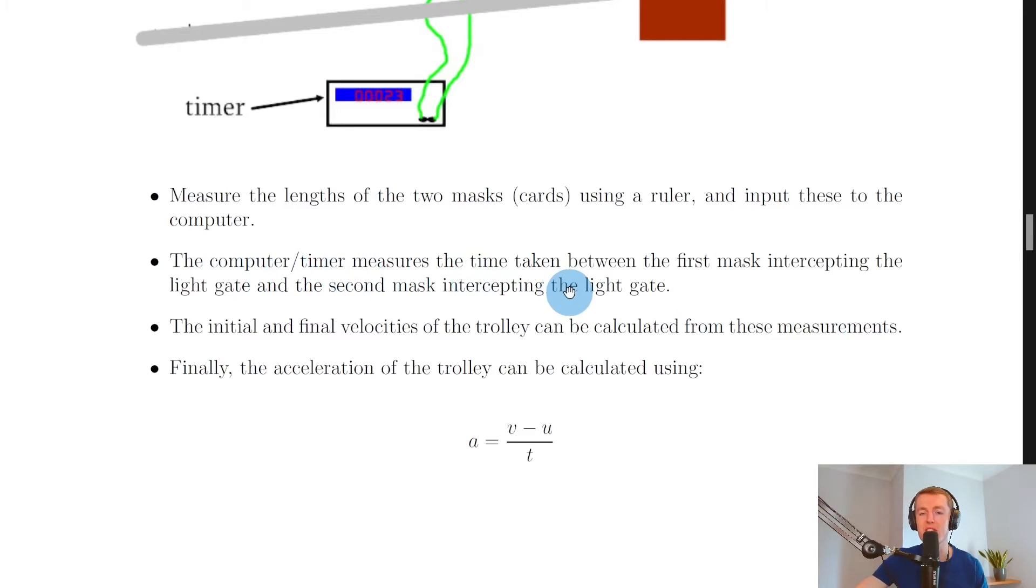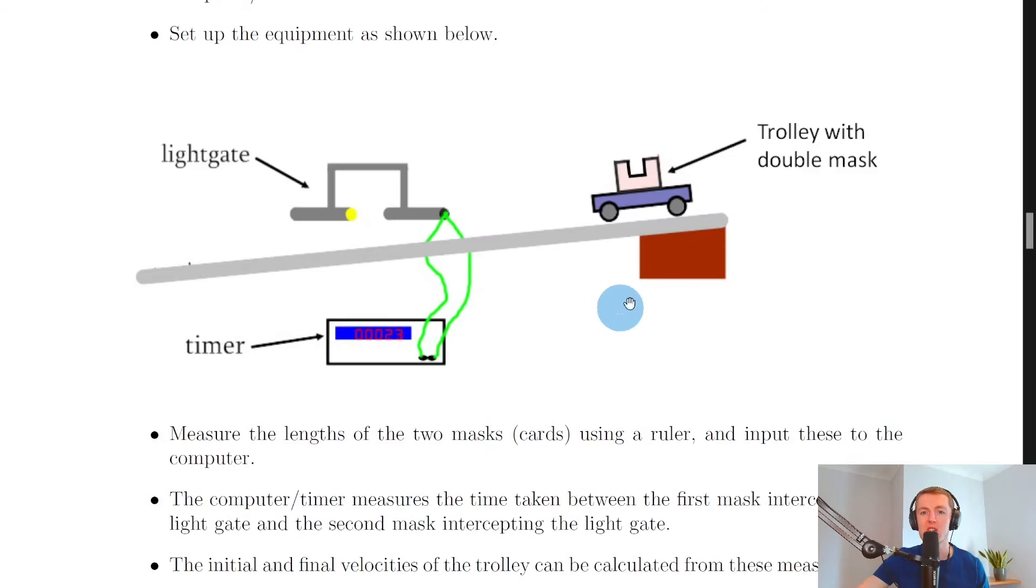Then it says that the computer or timer measures the time taken between the first mask intercepting the light gate and the second mask intercepting the light gate. The initial and final velocities of the trolley can be calculated from these measurements.